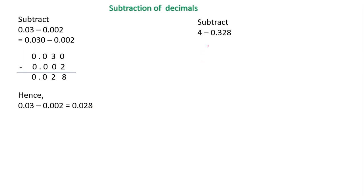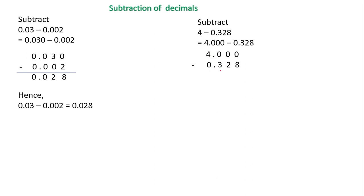Let's do the last problem: subtract 4 minus 0.028. The first number has no decimal places, so I will convert it into like decimals. After converting, 4 becomes 4.000 and the second number stays 0.028. I write the first number, then write the second number below it with respect to place names: zero in ones, decimal point below the decimal point, zero in tens, two in hundreds, eight in thousands.